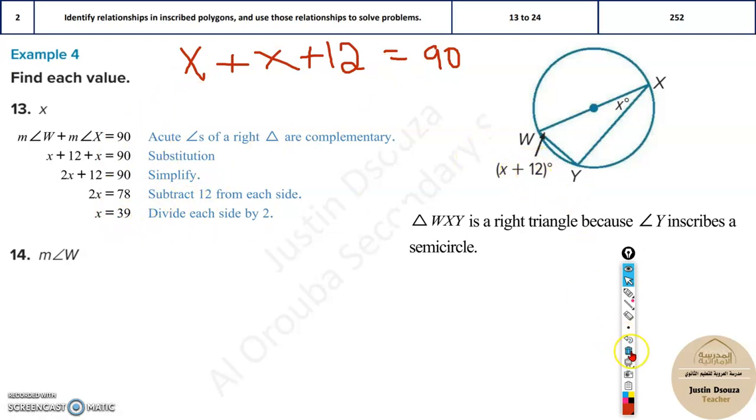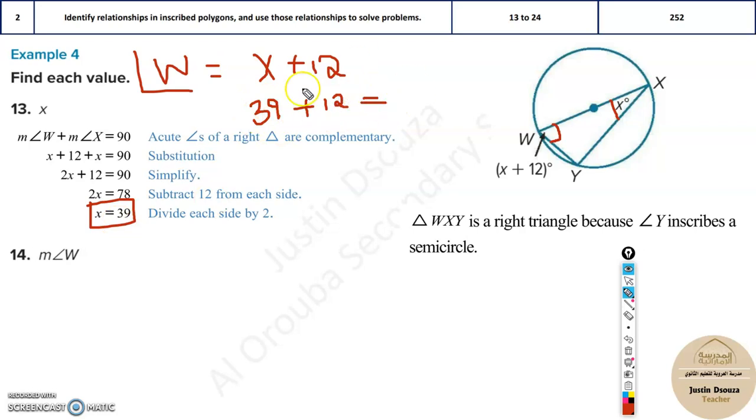If they had asked you angle w, because sometimes in an exam they'll ask you angle w, you should remember it's not x. In this case, x is the answer. But sometimes they will ask you what is the angle of w. So then please put x plus 12, put this x back over here, 39 plus 12, and this would be the final answer.